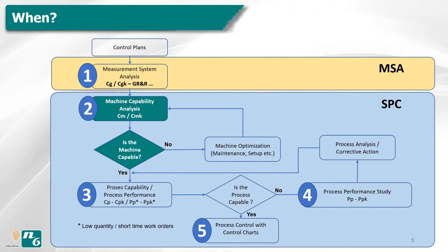When we do a machine capability study, it must be completed before the process capability study and process performance study in statistical process control applications. If not, we cannot define the cause of variation in the process, and therefore we cannot touch the real effect sources to eliminate or reduce variation.